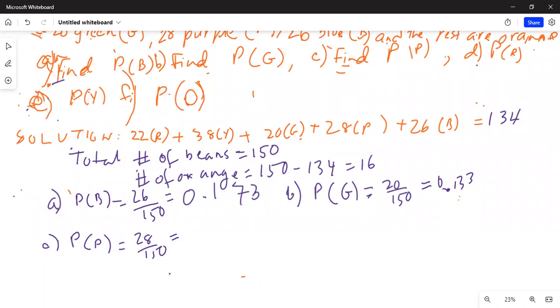Equals 0.167. Then Part D, find probability of red. How many reds are there? 22 out of 150 equals 22 divided by 150, which is 0.147.